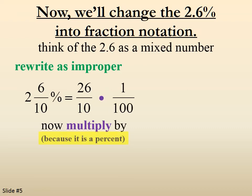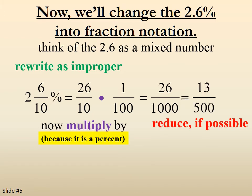Now we're going to apply the percent, so we multiply by 1 over 100, which gives us 26 over 1,000. We can reduce to get 13 over 500. So 2.6% as a fraction is 13 over 500.